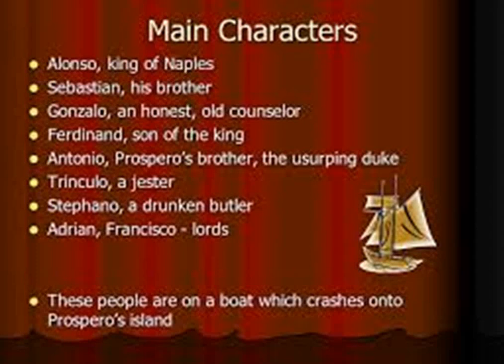Now we move to the main characters. The main characters you have to deal with are: first, Prospero; then Miranda, daughter of Prospero; Ariel, a spirit; then Caliban, half-human; then Antonio, Prospero's brother; then Alonso, king of Naples; Ferdinand, son of Alonso; then Gonzalo. These are the characters you need to refer to.